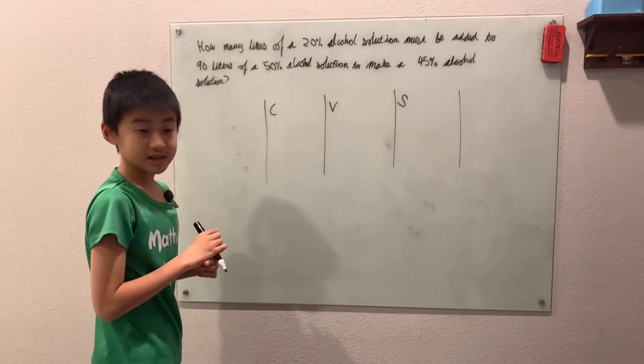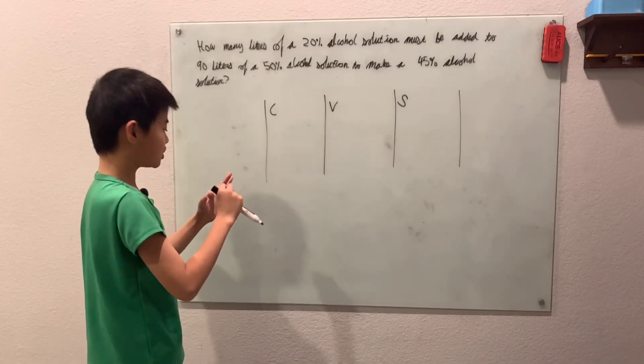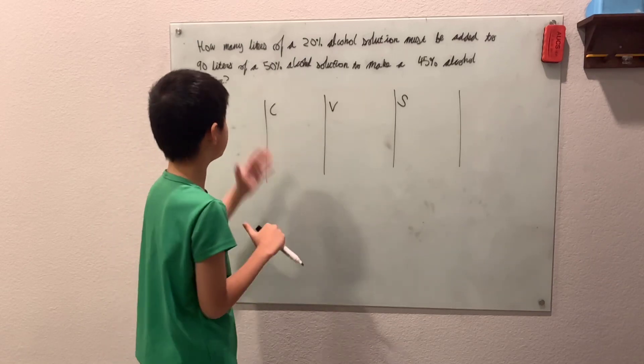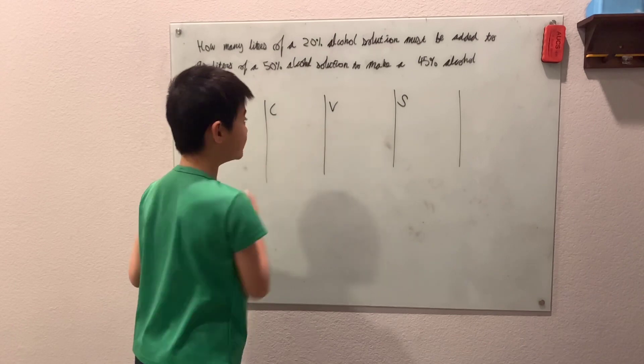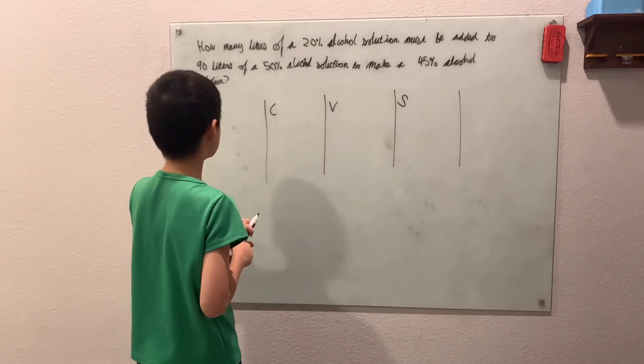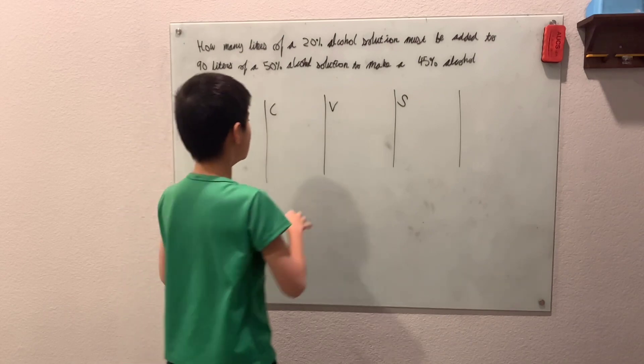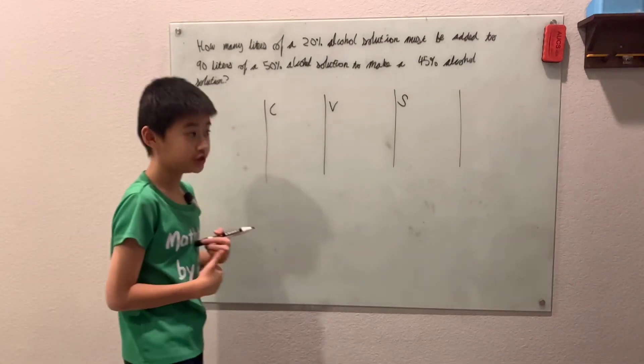And V stands for volume, which is how much stuff we have, the volume, how much there is of the solution. And substance is how much alcohol or how much of this concentrated stuff is there.